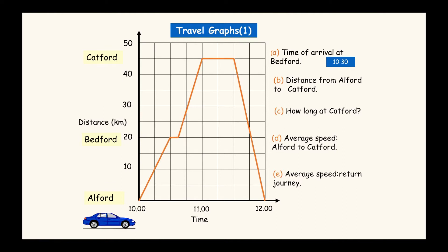Question b asks the distance from Alford to Catford. From where they begin at Alford to where they end at Catford, looking at the distance on the graph, it's halfway between 40 and 50, so the answer is 45 kilometres. For how long they spend at Catford - they've stopped for two squares, and since each square is 15 minutes, two squares is 30 minutes.